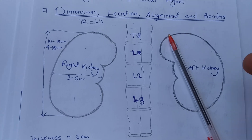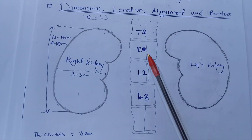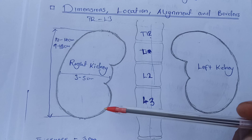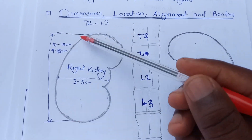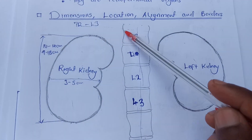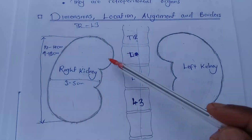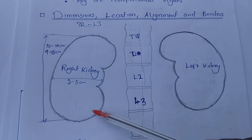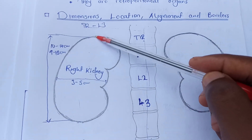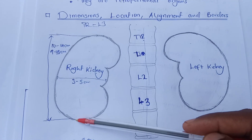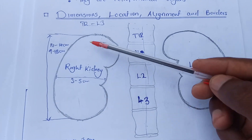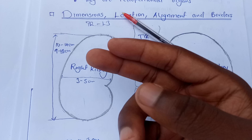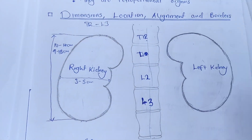The borders of the kidneys are simply the lateral border, the medial border, the superior pole, and the inferior pole. On the surfaces we have the anterior surface in front and then the posterior surface behind.